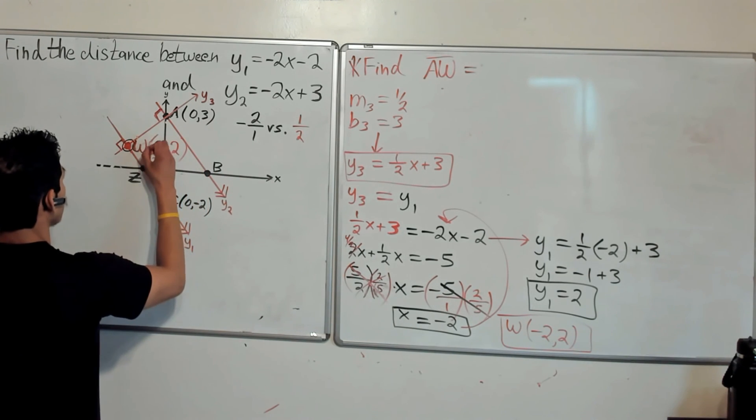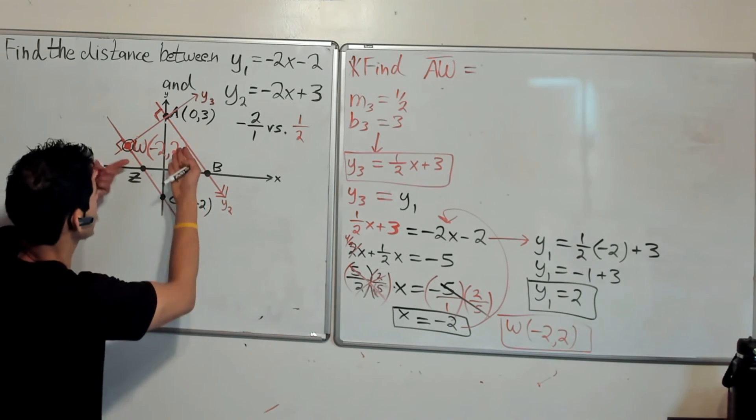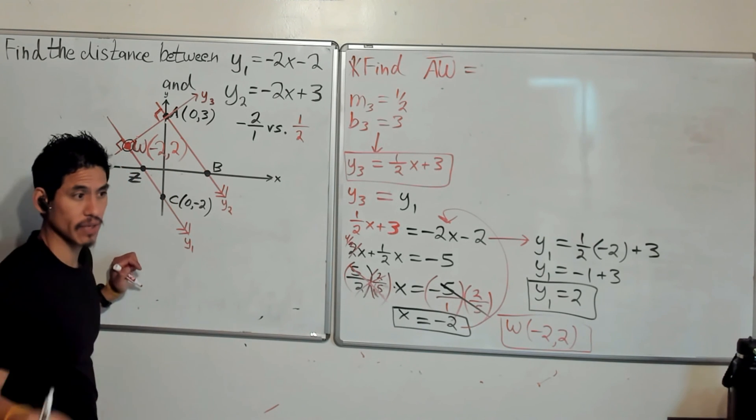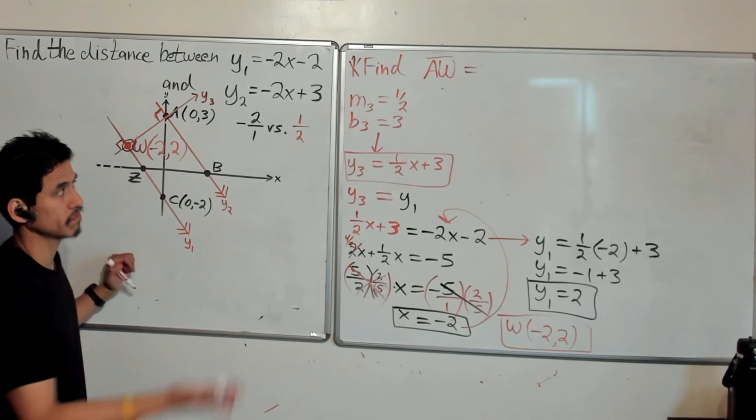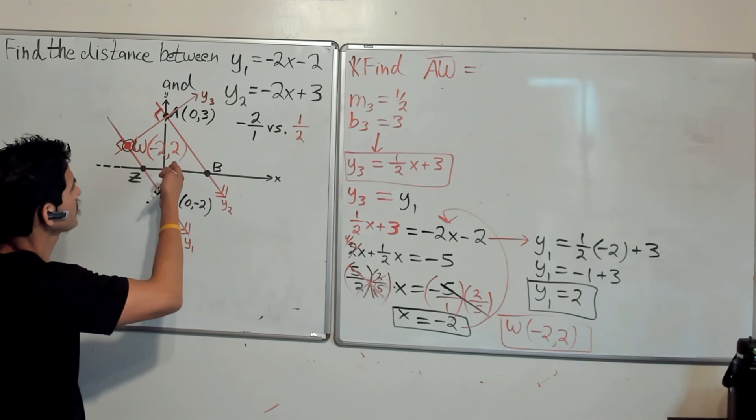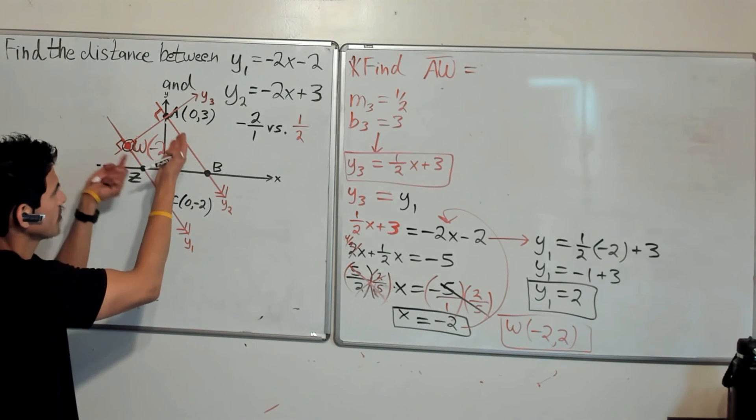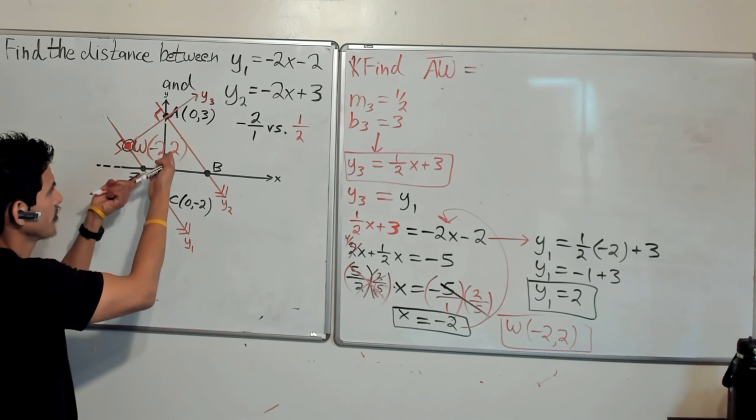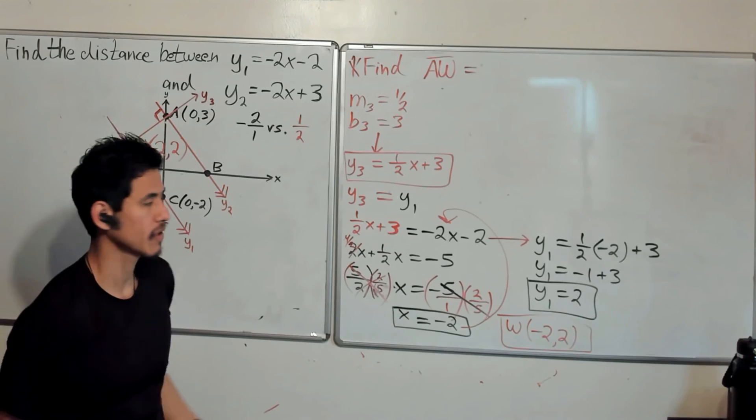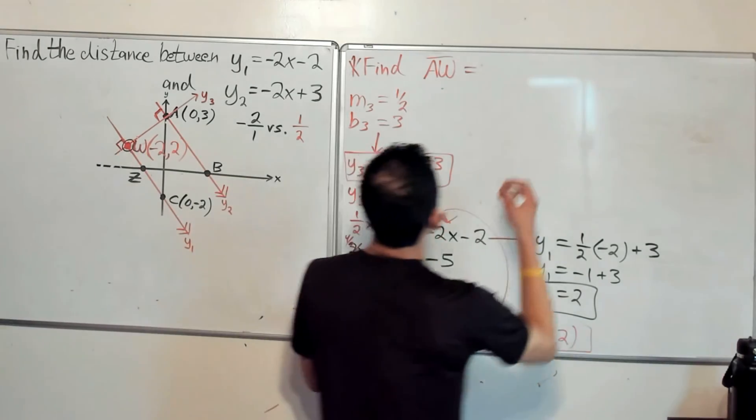Alright, now again make sure you take a moment to check that your answers are making sense, because you don't want to make a careless mistake. Because again, you can just see it with the graph, you can see if it makes sense. If you get like negative 2 negative 2, then maybe it's an algebra thing that you can easily fix. But this makes sense, so now we just go ahead and do the distance formula to find AW.